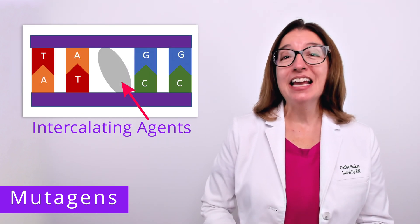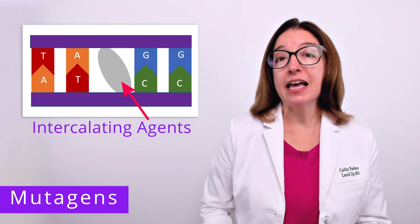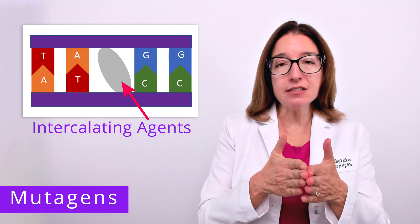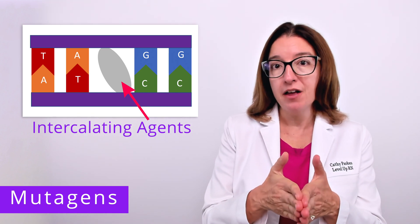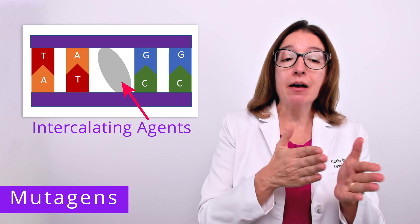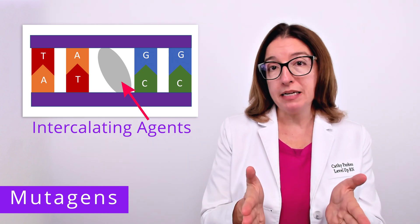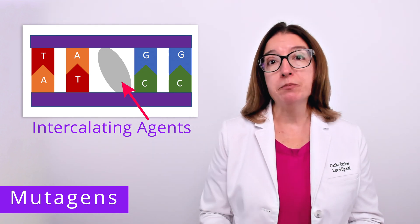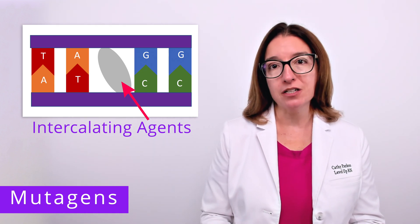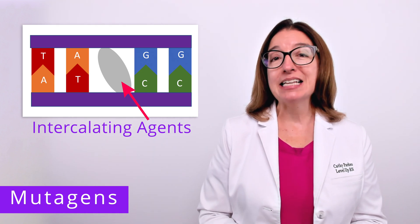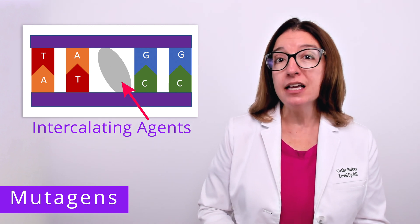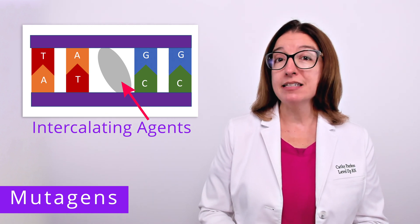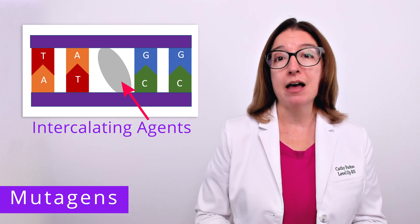An intercalating agent is a chemical that inserts itself between base pairs, causing abnormal spacing between those base pairs. This in turn leads to frameshift mutations. An example of an intercalating agent is ethidium bromide, which is a fluorescent dye used in laboratories.